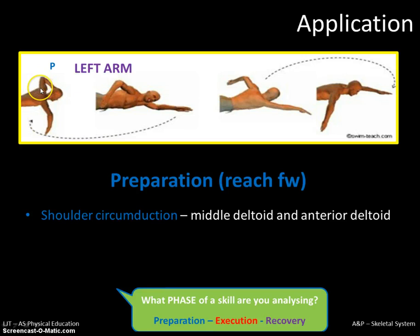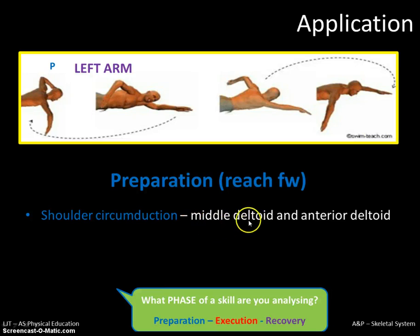Now we need to add the muscles that create those movements. Having established that there is shoulder circumduction, the deltoid — which has three parts: a front, a middle, and a back — contributes a lot to the rotational circular movements at the shoulder. The middle deltoid contributes more to lifting the arm and shoulder out of the water, and the anterior deltoid is responsible for the forward part of that circular movement, pulling the arm forward.